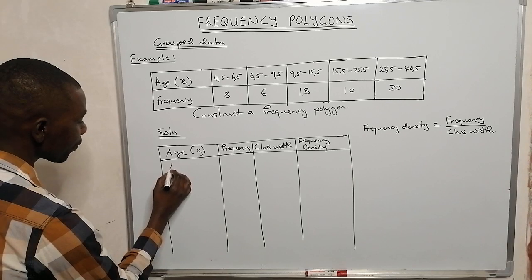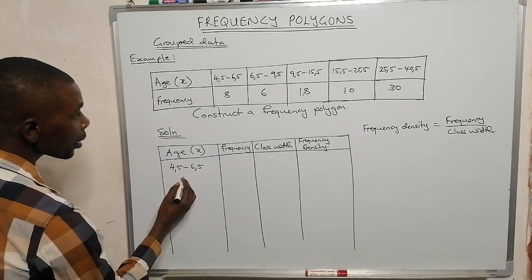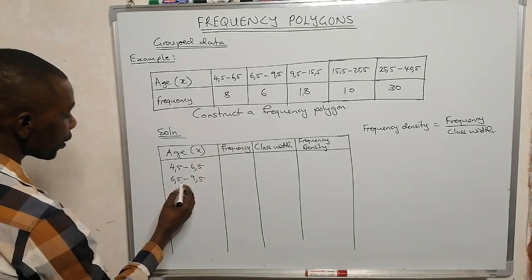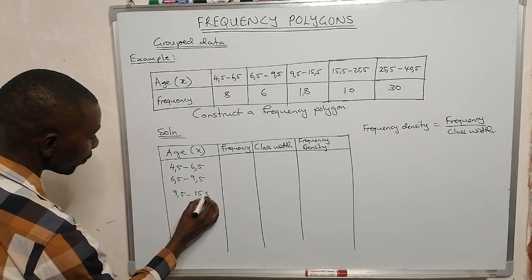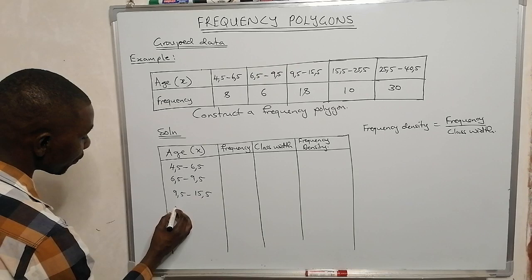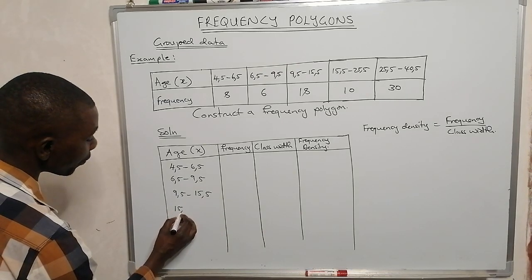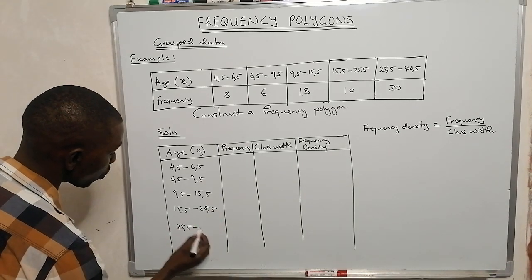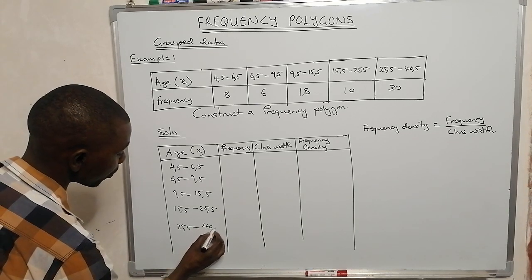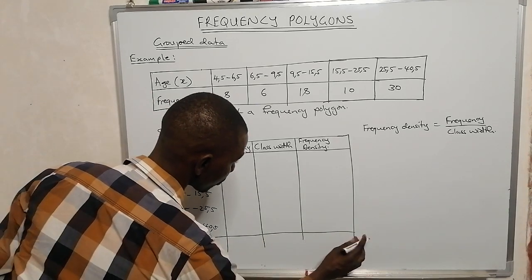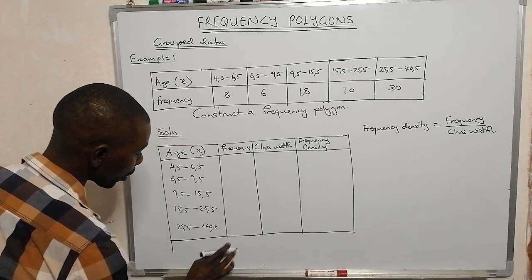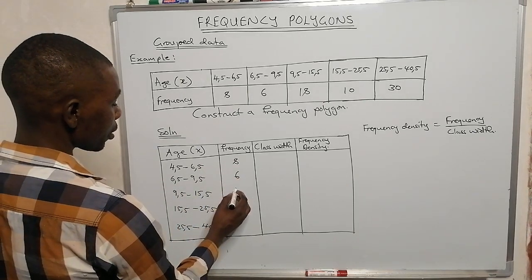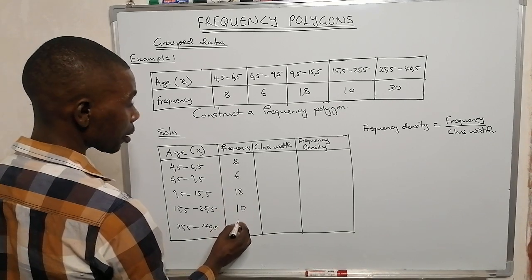Restating the class intervals in our table: 4.5–6.5, 6.5–9.5, 9.5–15.5, 15.5–25.5, and 25.5–40.5. The frequencies are: 8, 6, 18, 10, and 30.